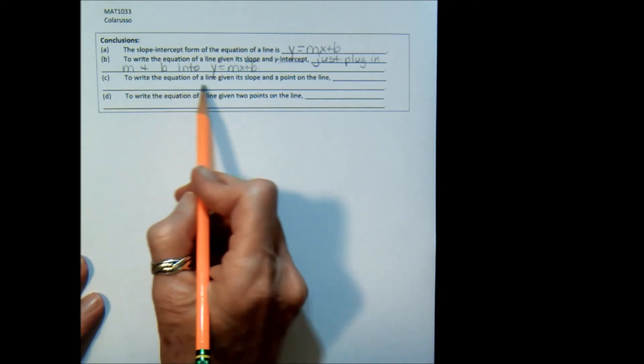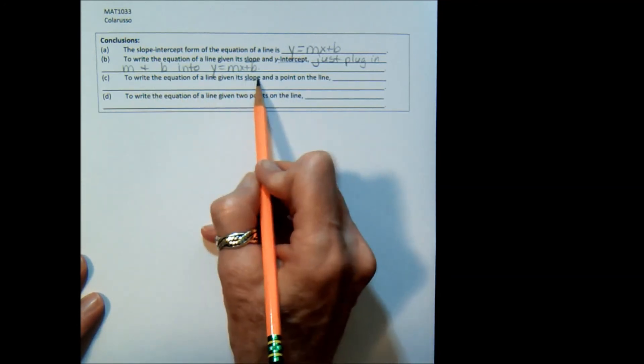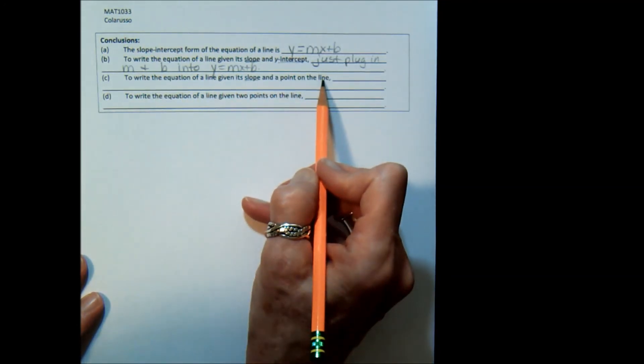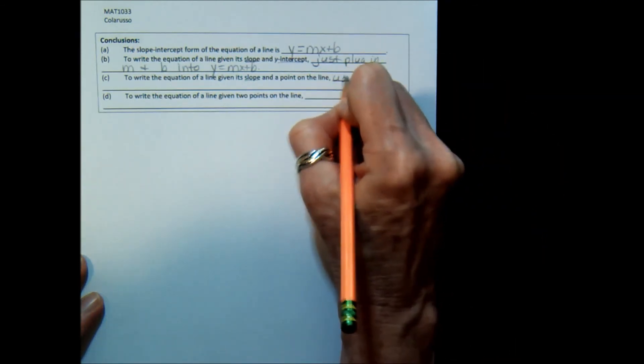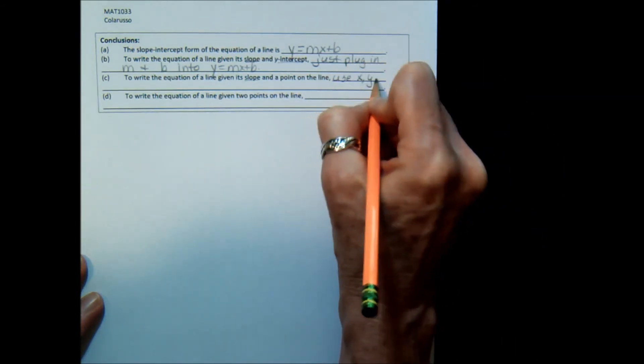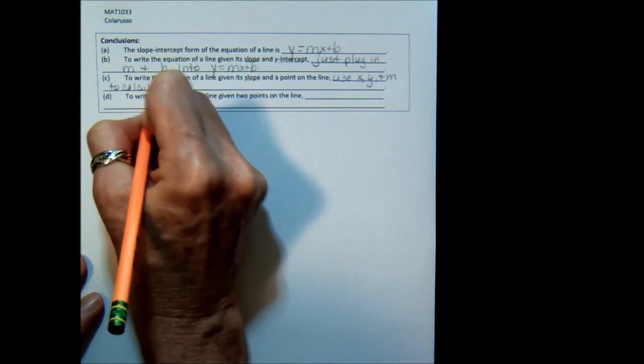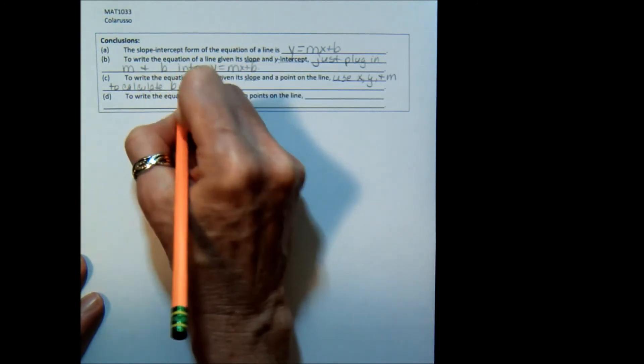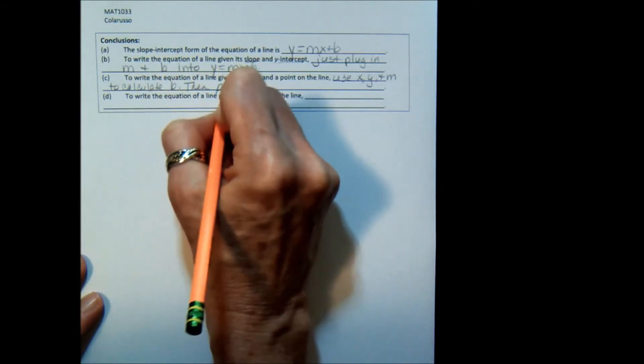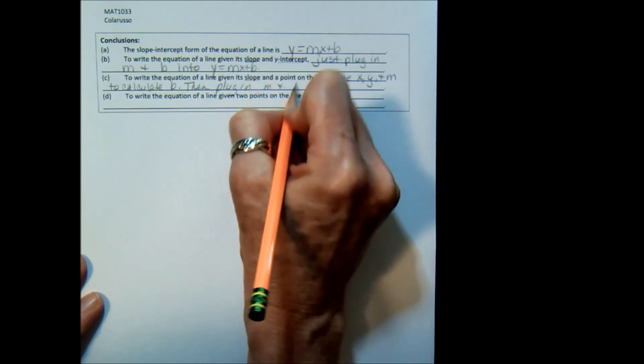To write the equation of a line, if you are given the slope and a point on the line, meaning not the intercept but another point. Then what you do is you use x, y, and m to calculate b, then plug in the m and the b.